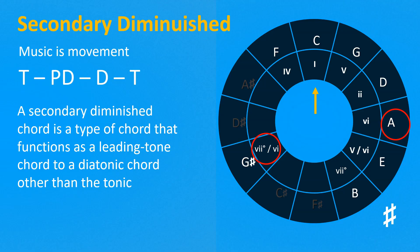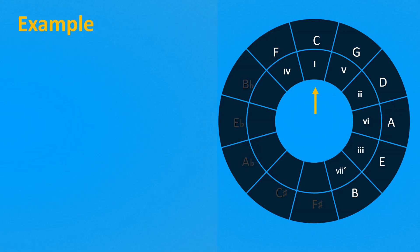You can easily find the diminished seventh chord of any chord by moving 25 minutes clockwise. Let's see how it sounds on this simple progression: C, A minor, F, G.